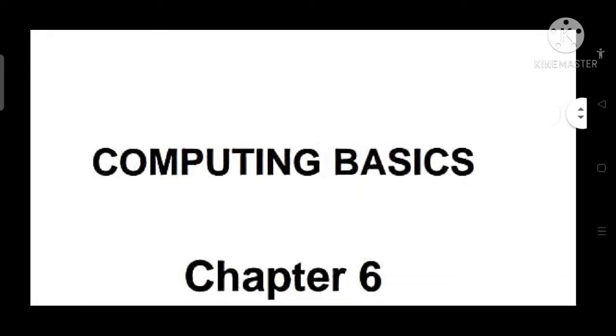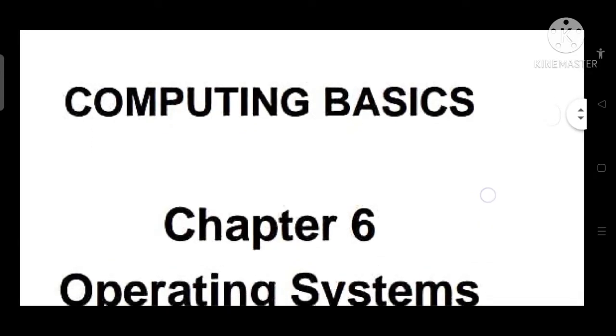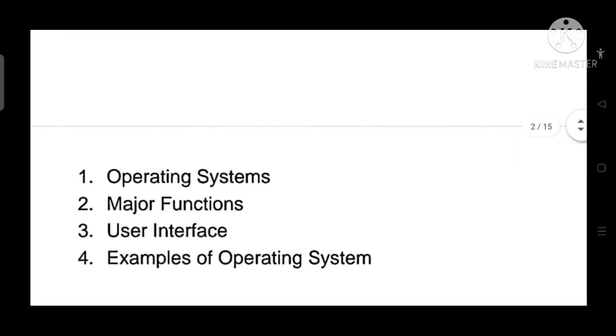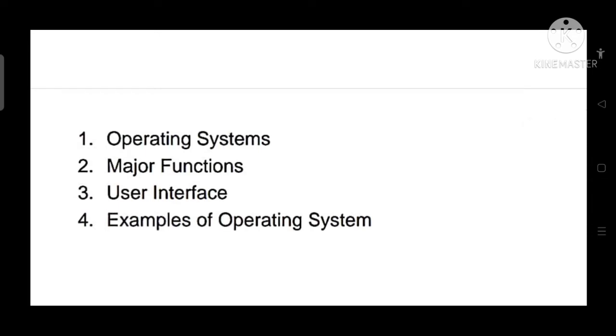Hello students, how are you doing? I hope you must be doing good and you must be safe, fit and fine. So today you are going to understand about computer basics, and the next chapter is operating systems. You must be aware about operating systems — you must be accessing operating systems on your cell phone, laptops, and computers. Today we are going to understand how many types of operating systems are there and what are their uses. Our topics for this chapter are: operating system, its major functions, user interface, and examples.